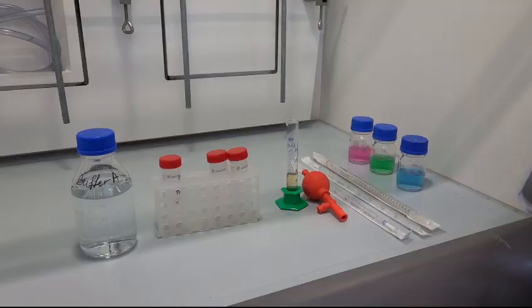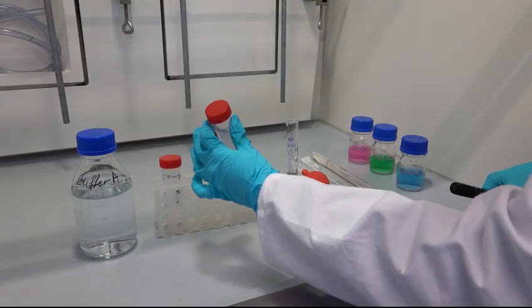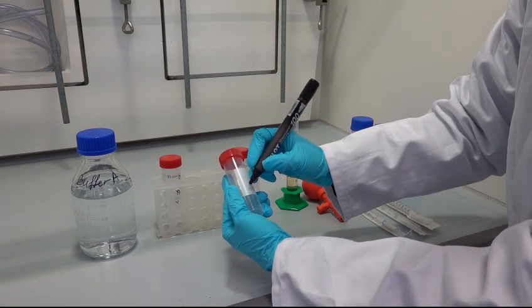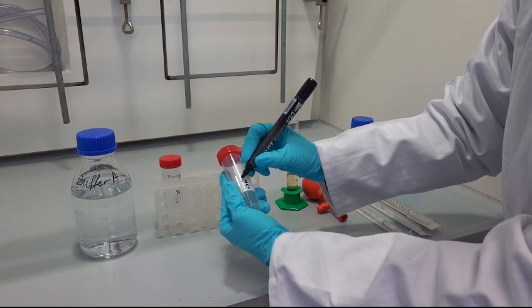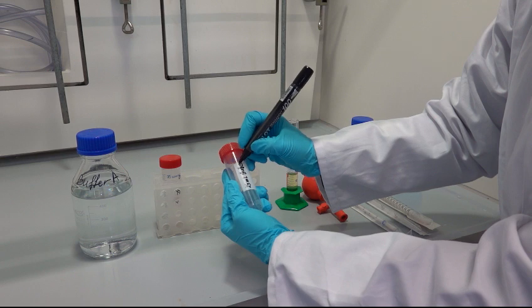In the last step we are adding buffer to previously separated egg white, which was added to the cylinder and stored on ice. Regularly, to 5 ml of egg white, 25 ml of buffer A is added. In our case we prepared two aliquots to work with.